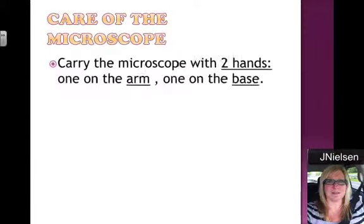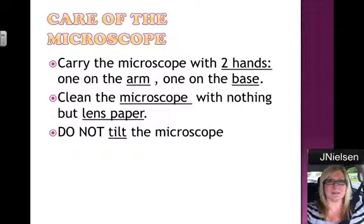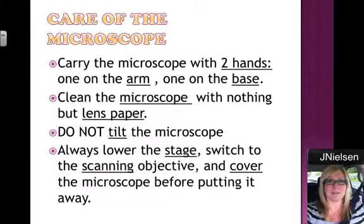Care of the microscope: carry the microscope with two hands — one on the arm and one on the base, which is the bottom. Clean the microscope with nothing but lens paper, and when we take out the microscope for the first time in class, I will show you how to do this. Do not tilt the microscope. Always lower the stage. Switch to the scanning objective, which is the smallest objective. And cover the microscope before putting it away.